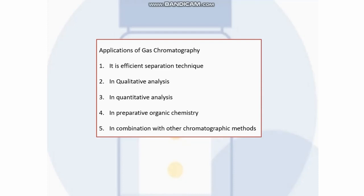GLC provides an excellent means of confirming the presence or absence of a component in a mixture. After recording the chromatogram of a mixture, a component suspected to be present is added to it and the process is repeated. If a new peak appears in the new chromatogram, the added compound is not a component of the original mixture. If an enhancement of an existing peak occurs, it can be concluded that the component is present in the mixture.